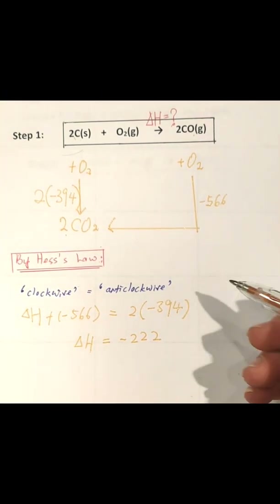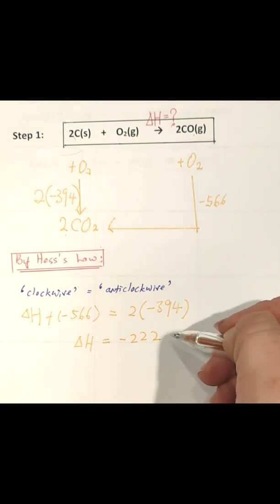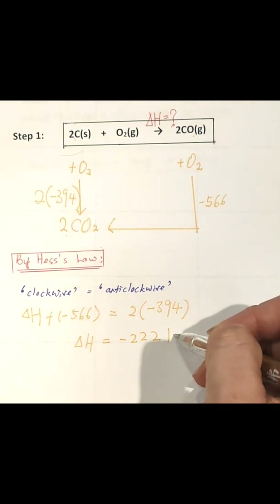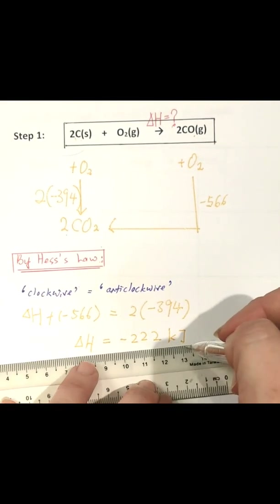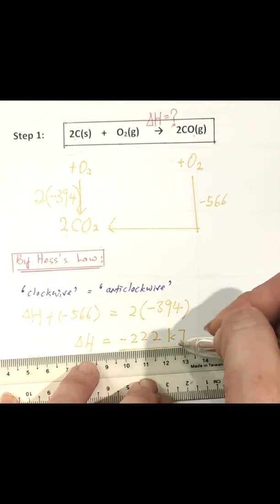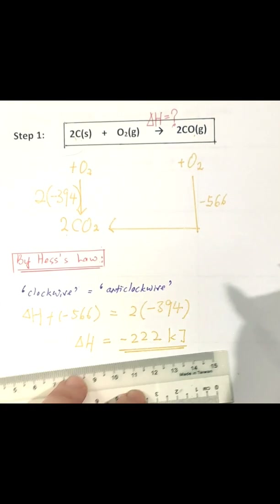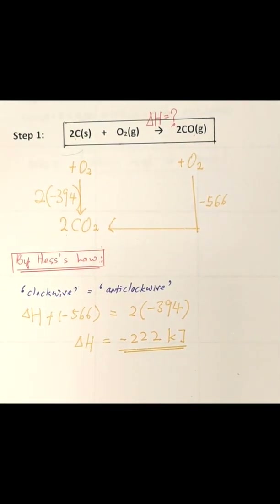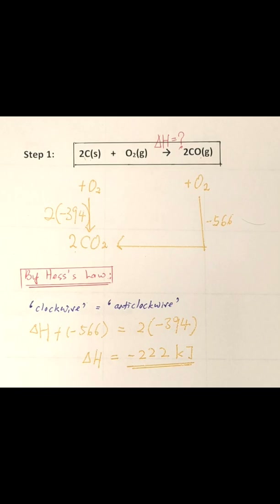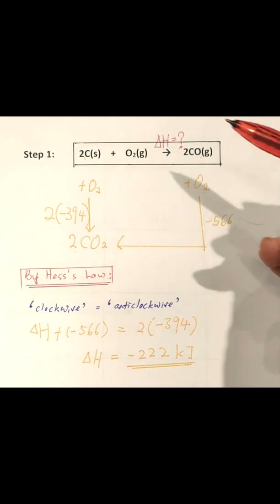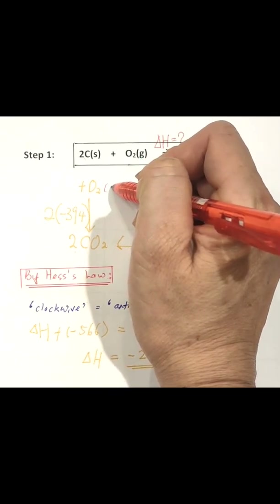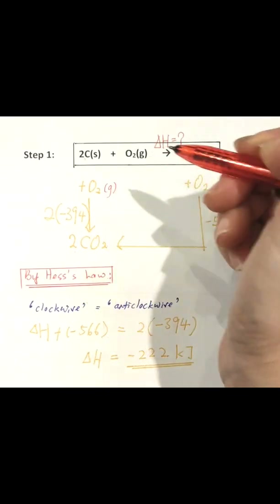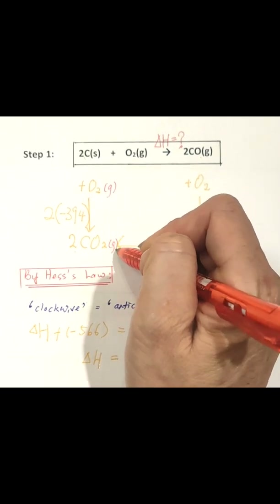The enthalpy change of this reaction is equal to −222 kJ/mol. Remember to put the unit of the enthalpy change — it should be kilojoules per mole. Before we go to the second example, always bear in mind that we need to write the state symbols: oxygen is in the gaseous state, and carbon dioxide is in the gaseous state.